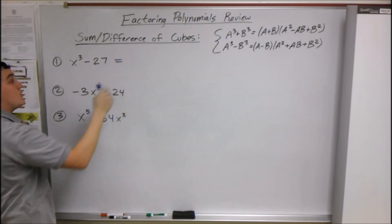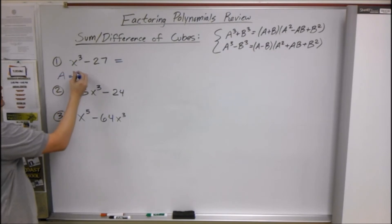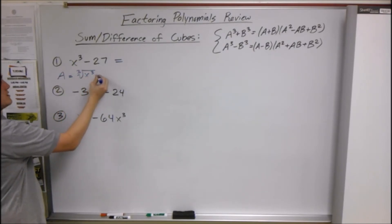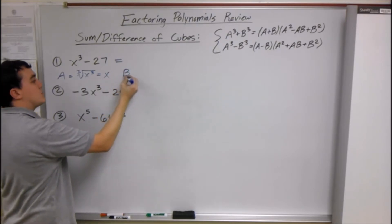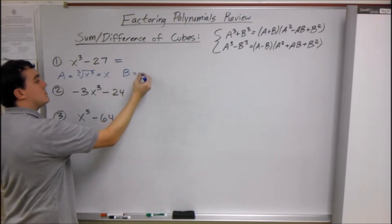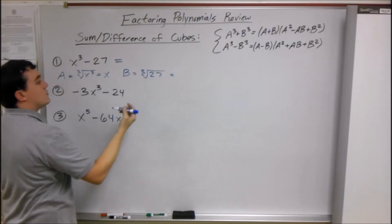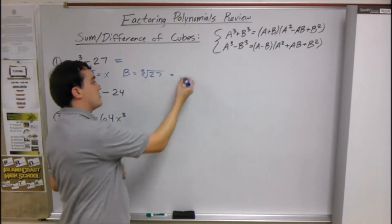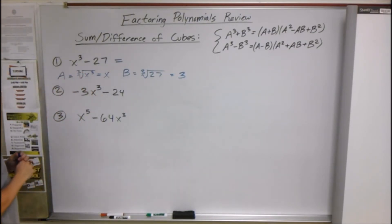If you want to use the formula: a is equal to the cube root of the first term, and the cube root of x³ is x. b is the cube root of 27 — what times what times what equals 27? 3 × 3 × 3, so b = 3. We just plug those into the formula to get our factored form.